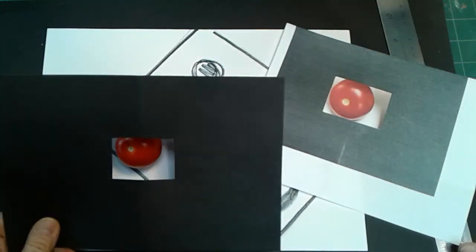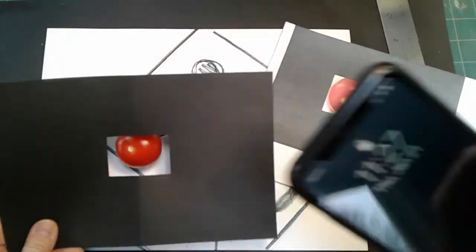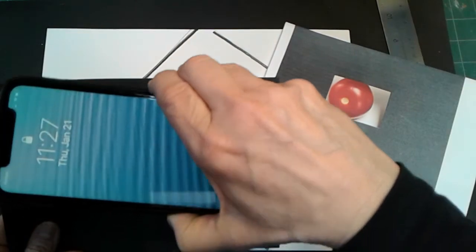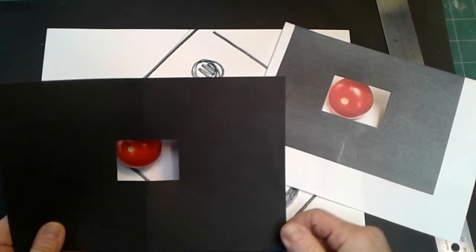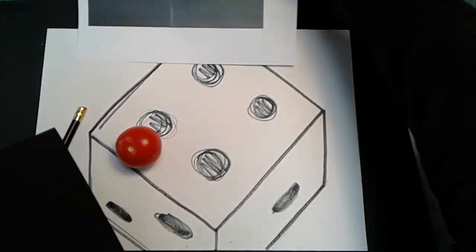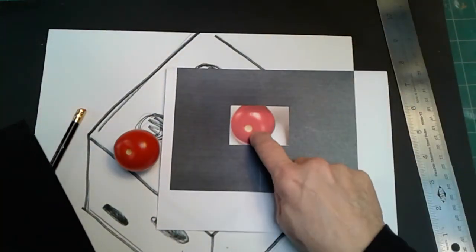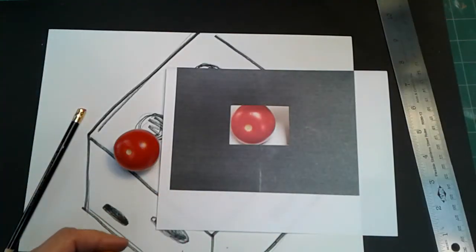You're going to hold your viewfinder there. You're going to take a picture of that object. You might need some help with this part. Then you have something to look at when you draw your larger drawing.